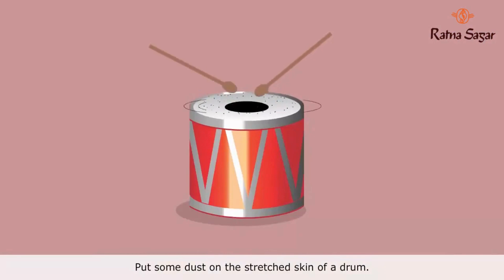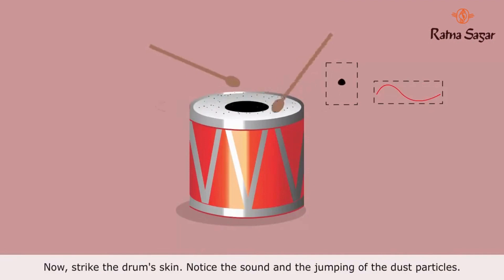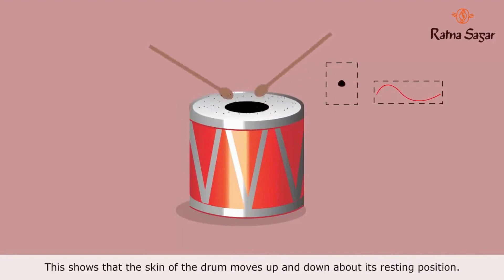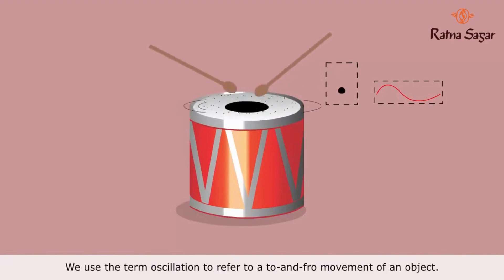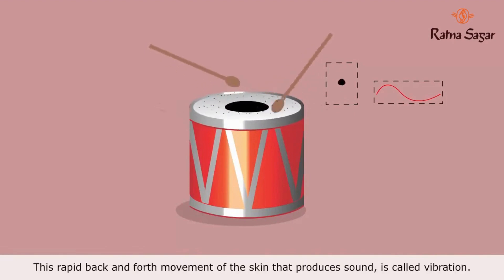Put some dust on the stretched skin of a drum. Now strike the drum's skin. Notice the sound and the jumping of the dust particles. This shows that the skin of the drum moves up and down about its resting position. This movement is so fast that it is very difficult to notice. We use the term oscillation to refer to a to-and-fro movement of an object. This rapid back-and-forth movement of the skin that produces sound is called vibration.